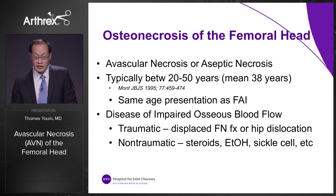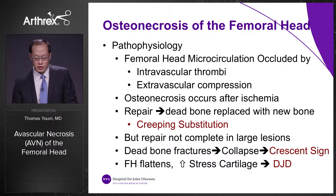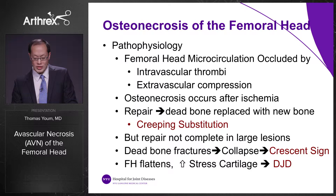The most commonly accepted pathophysiology is that femoral head microcirculation is occluded by intravascular thrombi with extravascular compression. Osteonecrosis or bone death occurs after ischemia. In the repair process, dead bone is replaced with new bone — called creeping substitution — but the repair is not complete in large lesions. The dead bone fractures and collapses, producing a crescent sign on x-rays. The femoral head eventually flattens, causing increased stress on the cartilage and eventual degenerative joint disease.